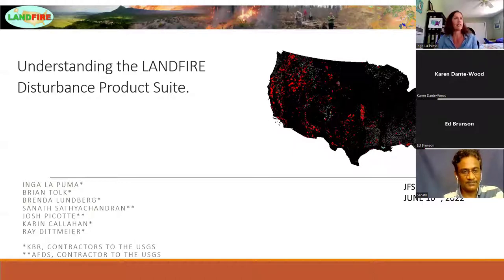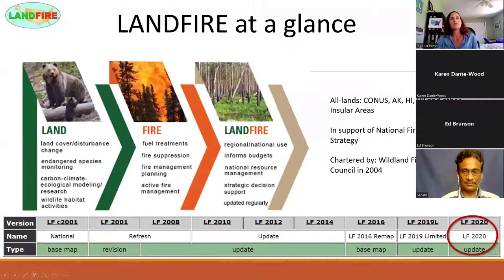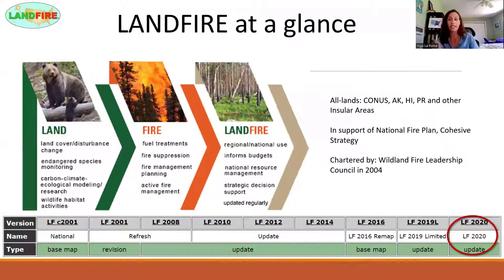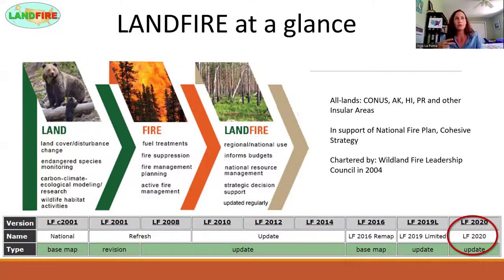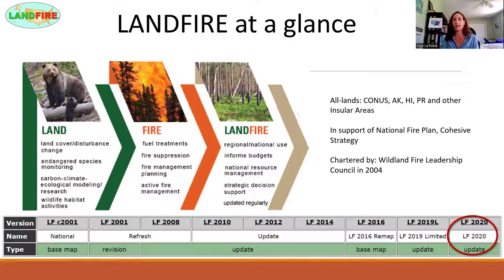So just a quick reminder of what Landfire is. We are a mapping data source, and we map every 30-meter pixel of the United States. That includes not only vegetation and fuels, but also development, roads, and agriculture. We have to assign something to every 30-meter pixel in the entire United States — we're all lands, we don't discriminate. We cover the conterminous U.S., Alaska, Hawaii, Puerto Rico, and some other insular areas.